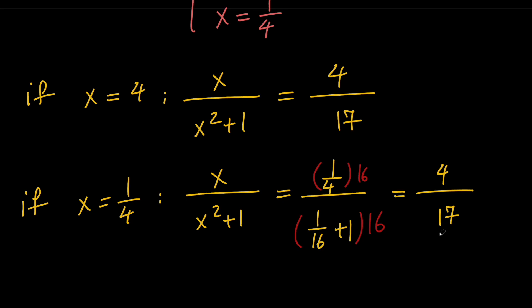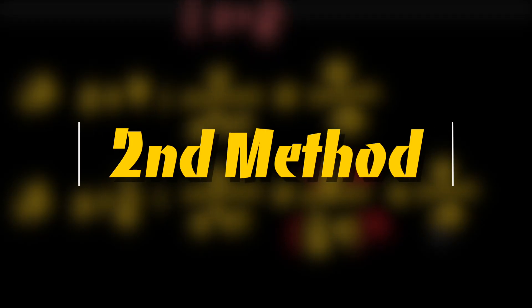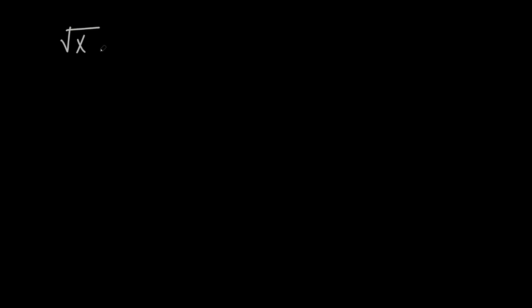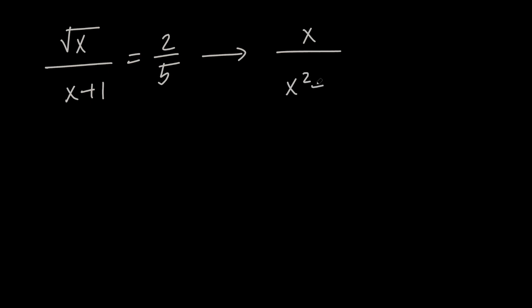Next let's go ahead and solve our problem using the second method. We have root x over x plus 1 equals 2 fifths, and we want to evaluate x over x squared plus 1.